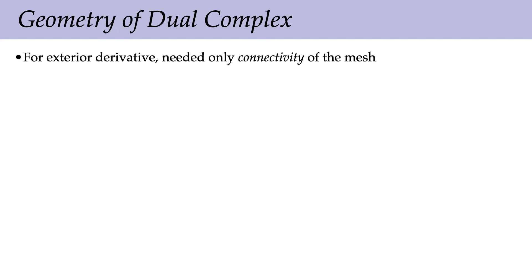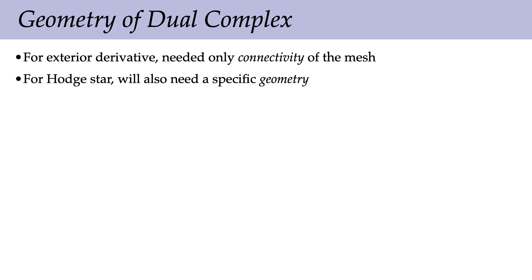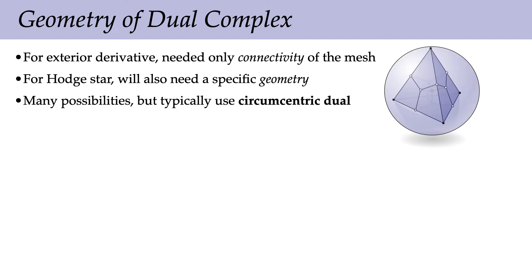To capture the Hodge star in the discrete case, the discrete exterior derivative only needed mesh connectivity, but the Hodge star requires geometry — lengths, areas, volumes — and also the geometry of the dual mesh, which we haven't nailed down yet. A very common choice is the circumcentric dual: the dual vertex of a simplex is placed at its circumcenter, the center of the smallest sphere through all vertices.